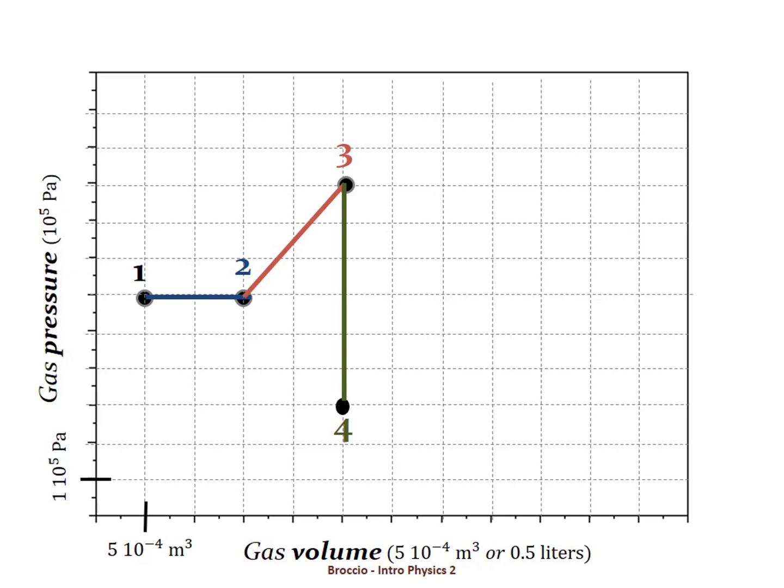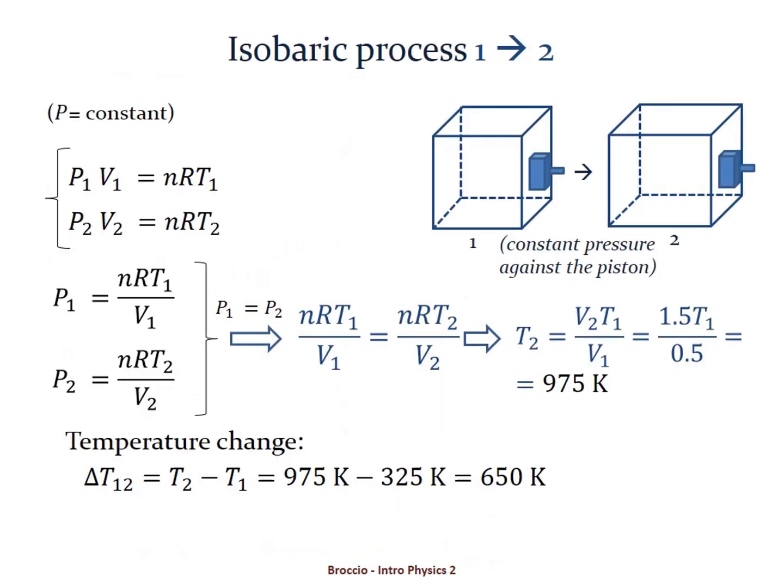The units meter cube will cancel and in fact we get 975 kelvins which is greater than the initial temperature. The temperature change is going to be 975 minus 325 kelvin or 650 kelvin. So that's a temperature increase.